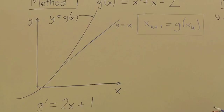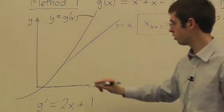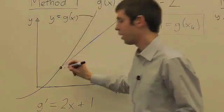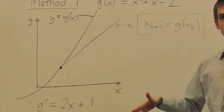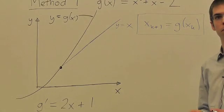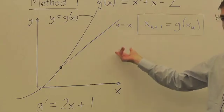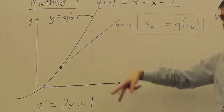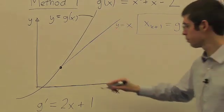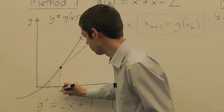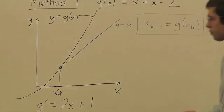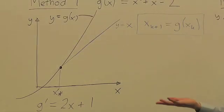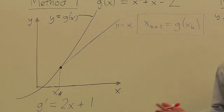There's a special point in this diagram, and that's where these two curves intersect. This point is none other than x star, our solution we're trying to find. Because remember, x star has to equal g of x star. So this point here is x star, which is root 2.